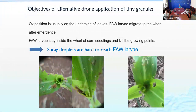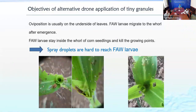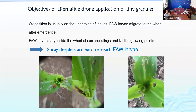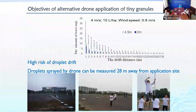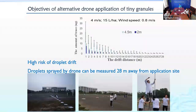However, drone spraying also has shortcomings. First, FAW larvae migrate to the whorl after emergence and stay inside the whorl of corn seedlings to damage the growing point, but the spray droplets cannot go inside the whorl, so droplets are hard to reach FAW larvae. Second, there is a high risk of droplet drift — spray by drone can drift 28 meters away from the application site at a wind speed of 0.8 m/s.